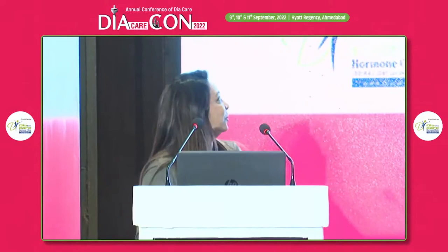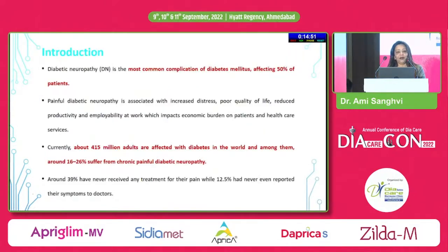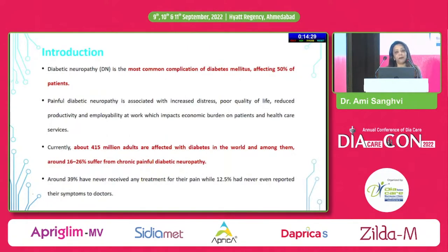Diabetic neuropathy — it's like our patients telling us 'don't get on my nerves, they have enough problems.' Diabetic neuropathy is one of the most common complications we encounter in patients with diabetes, affecting around 50% of patients. Painful neuropathy is associated with increased distress, poor quality of life, leading to reduced productivity and employment, which directly or indirectly impacts the economic burden on the patient and the healthcare system.